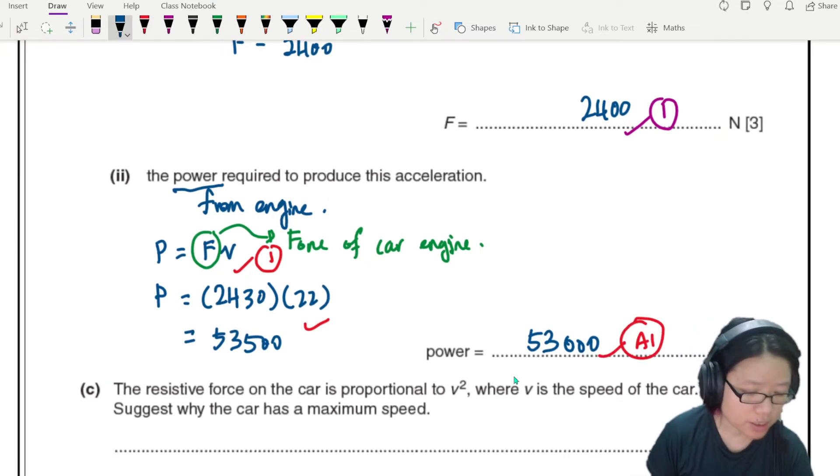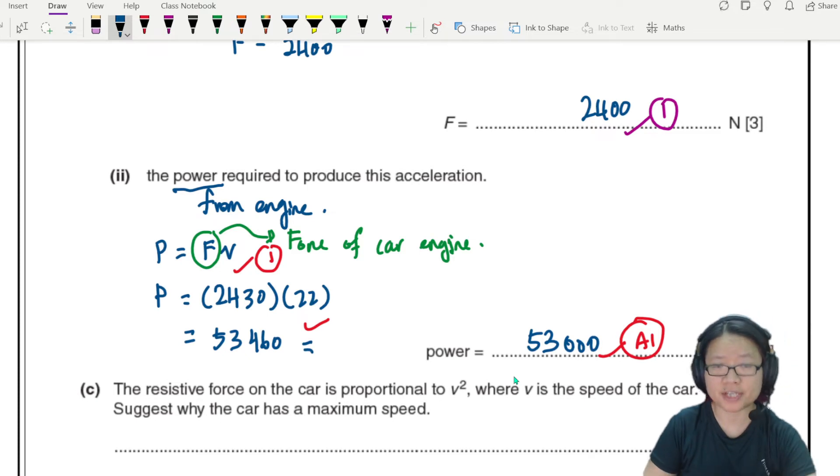leading to the final answer. So a slight calculator error, this is 53,460. If you want to round to three significant figures you can write 53,500 or two significant figures 53,000.